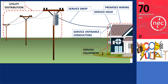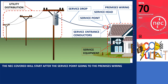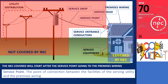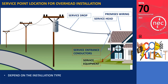The NEC coverage will start after the service point going to the premises wiring. The service point is defined by the code as the point of connection between the facilities of the serving utility and the premises wiring. The positioning of the service point is subject to variation based on the specific installation type, with the electrical utility typically determining its location.